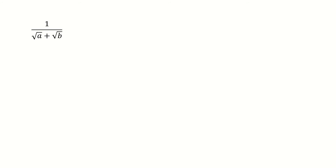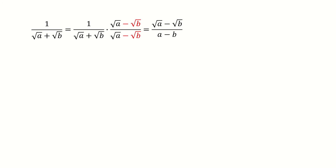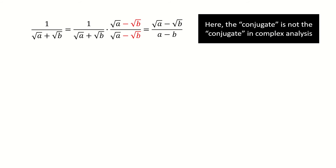We begin with the two-term case for the denominator. We just multiply the conjugate part to the numerator and denominator, so we got here. Note that when I say conjugate part, this conjugate is not the same conjugate in complex analysis. Here the conjugate only refers to √a + √b or √a − √b. So don't be confused.